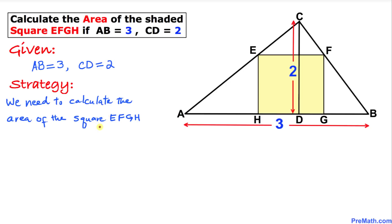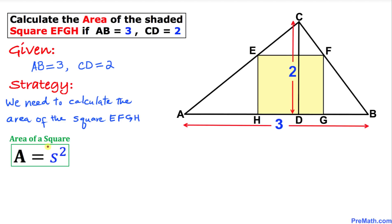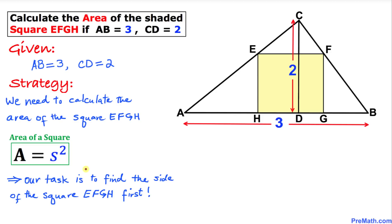We are supposed to calculate the area of this square EFGH. Let's recall the area of a square formula: A equals S squared, where S represents the side of a square. Therefore our task is to find the side of the square EFGH first.